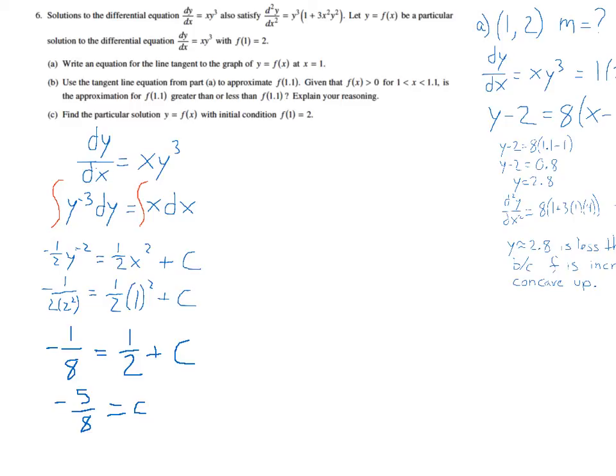Now we just need to plug that in and get Y by itself. So let's start back where we were over here and we get negative one half Y to the negative second is equal to one half X squared. Now instead of plus C I have minus five eighths. First thing I'm going to do here is I'm going to multiply through by negative two, so then I'll get one over Y squared is equal to negative X squared plus five fourths.